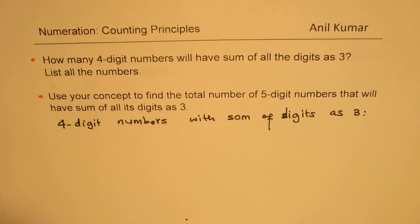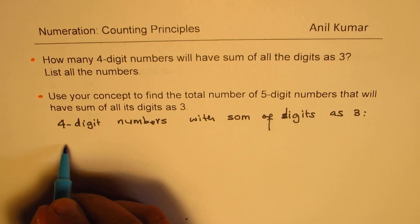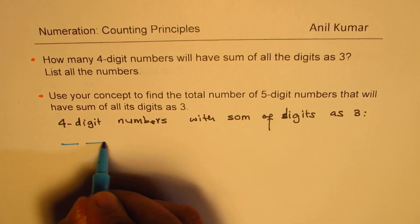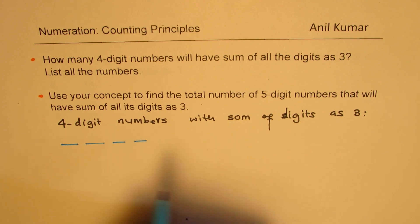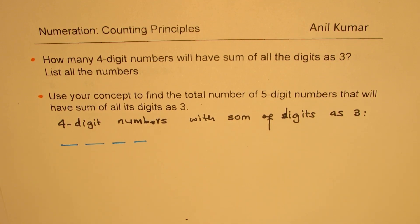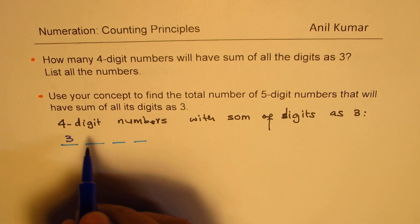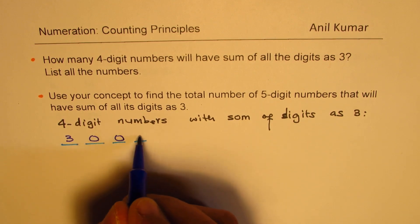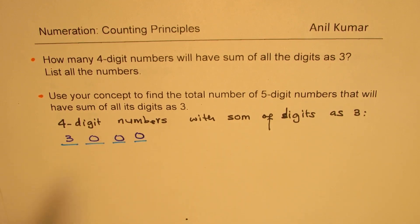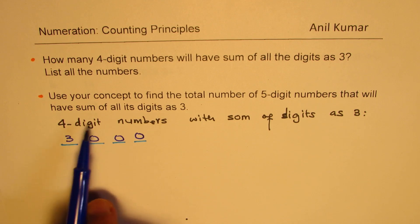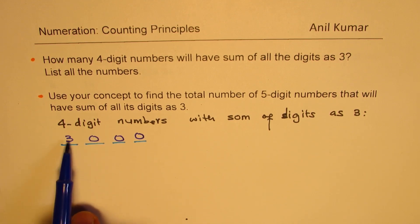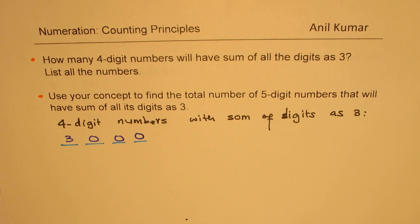So let us see how to find four-digit numbers with sum of digits as three. Let's do the first part. Now, if you want sum of three, what could be the combinations? We are looking for a four-digit number and we want sum of three. One possibility is that we could have three in the beginning, and in that case all other digits will be zeros. Since we need a four-digit number, we cannot start with zero. So that could be one combination.